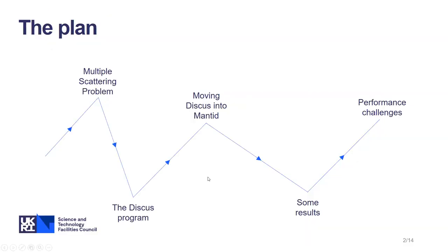The plan is something like this. I'm going to begin by talking about what multiple scattering is and why it's important that we correct for it. I'm then going to move on to talk about a fairly old piece of software called DISCUS, which is able to simulate and calculate multiple scattering effects, and the work I've done to extend the life of that software by moving it into Mantid and extending the feature set. I'll also be touching on a few more general points, including features in Mantid and the challenges of working with legacy software.